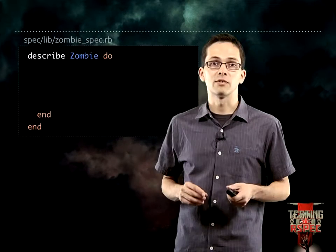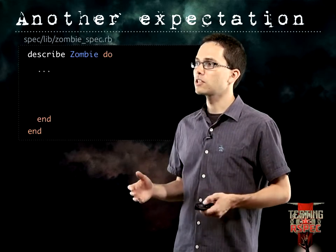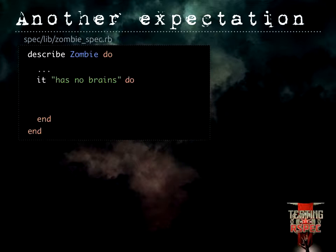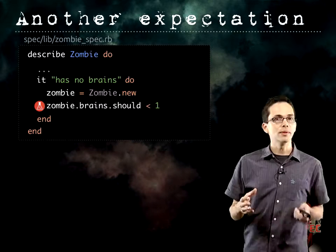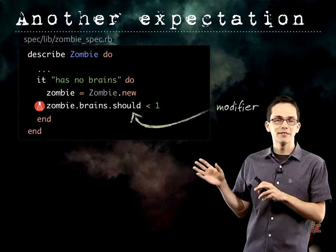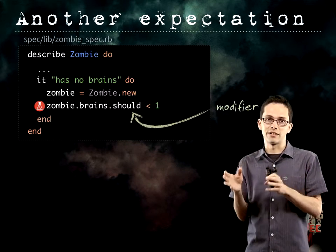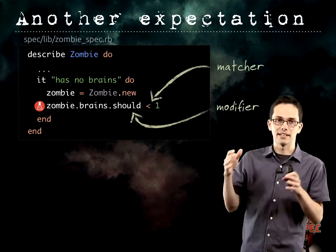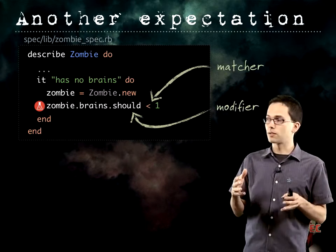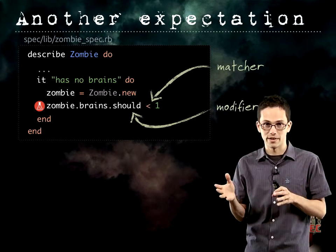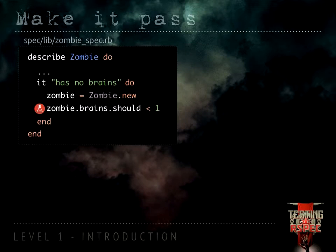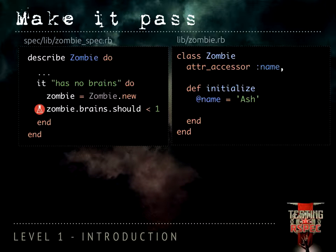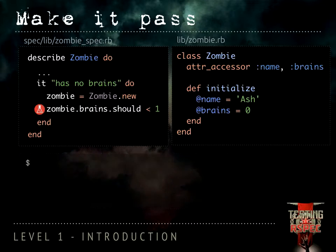Let's go ahead and write another example inside our specification. We're going to make sure the zombie has no brains when it gets instantiated, so we create a new zombie and test that zombie.brain.should be < 1. There are two components here: the modifier is should, and the matcher in this case is that less-than sign. If we run this test it doesn't pass as we'd expect. Going back into our zombie class, we create a new attr_accessor with brains and in initialize set brains equal to zero. Then when we run the spec, it passes.